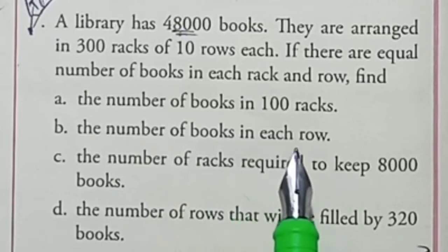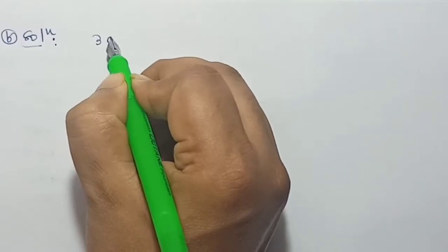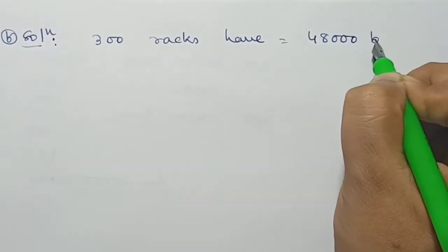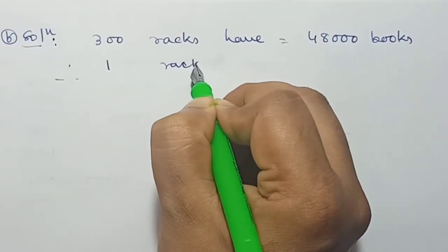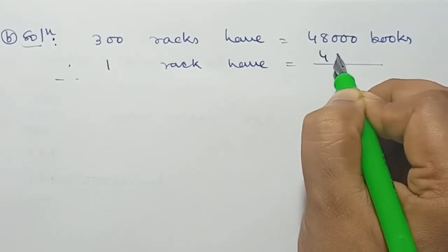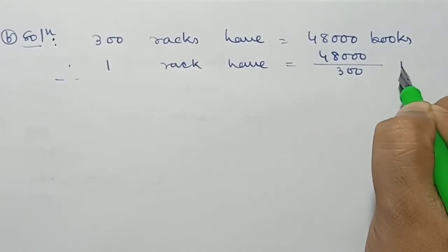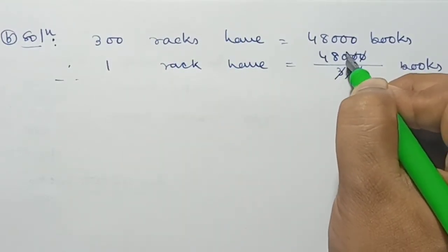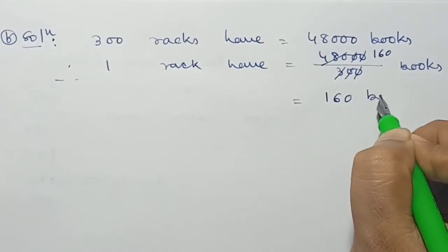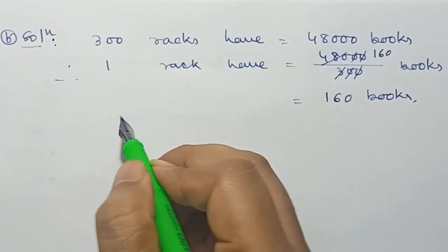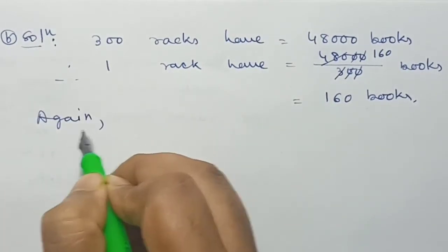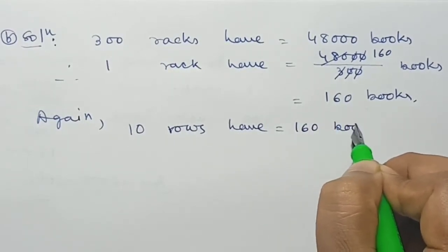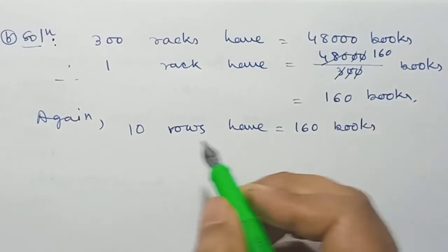Question B: the number of books in each row. To find how many books are in each row, we start with 300 racks have 48,000 books. Therefore, 1 rack has 48,000 divided by 300 books. Cancelling, 1 rack has 160 books.